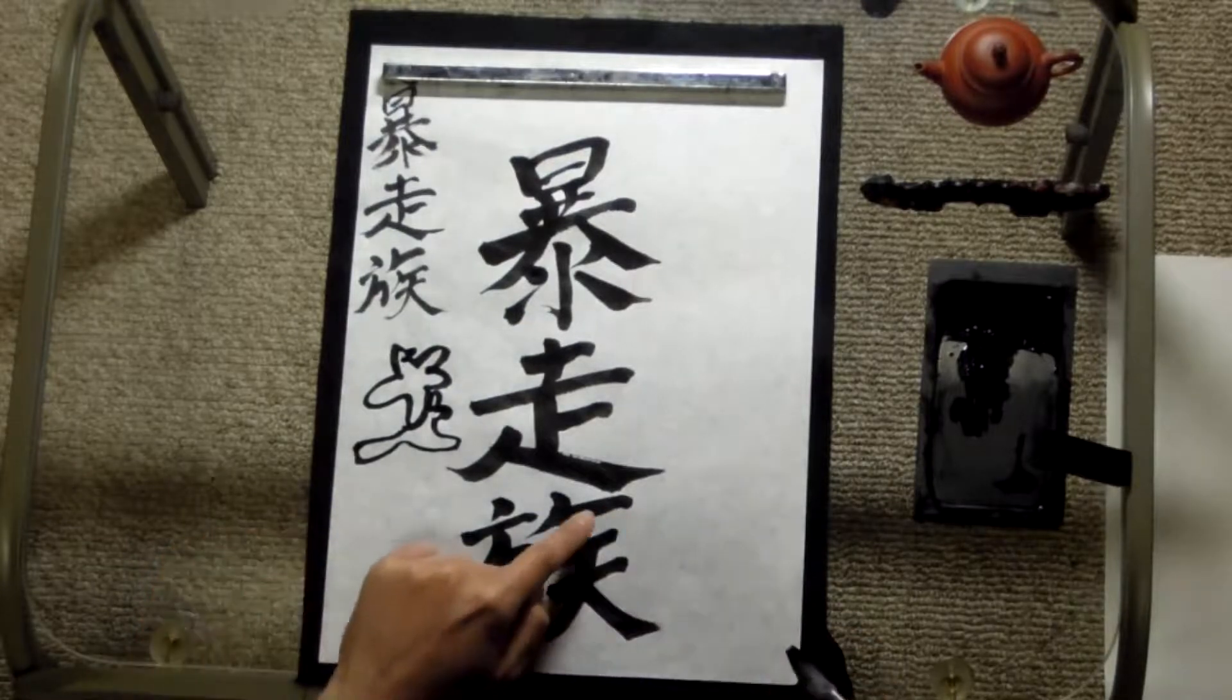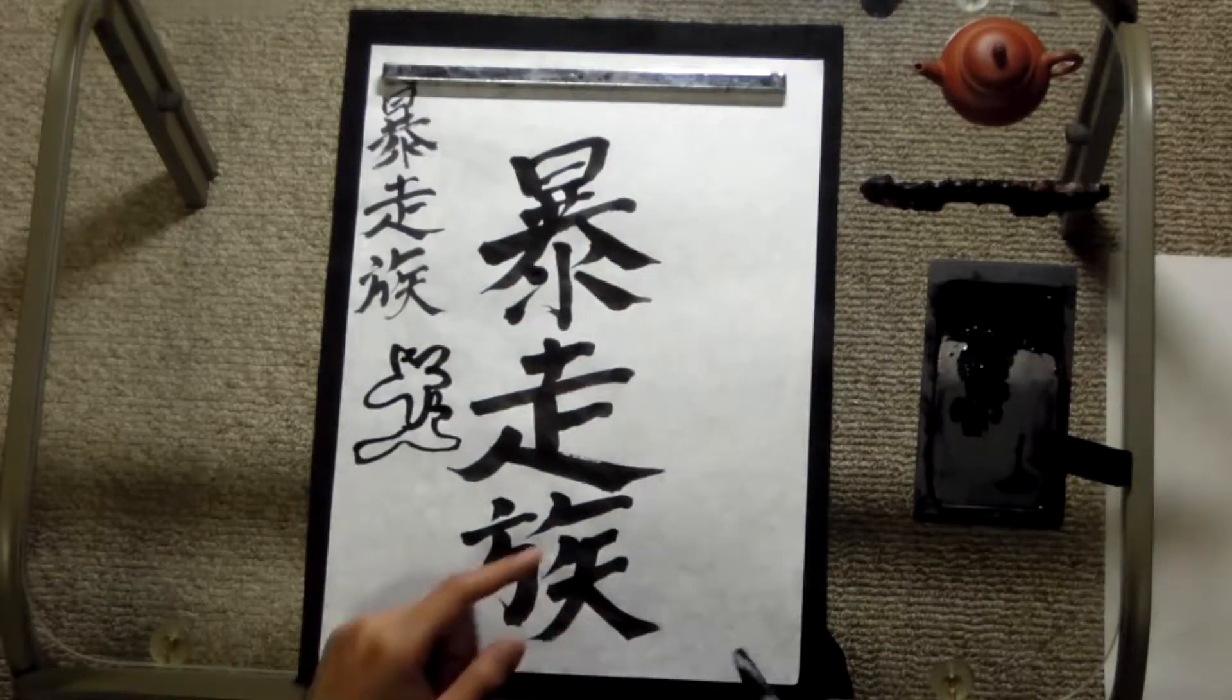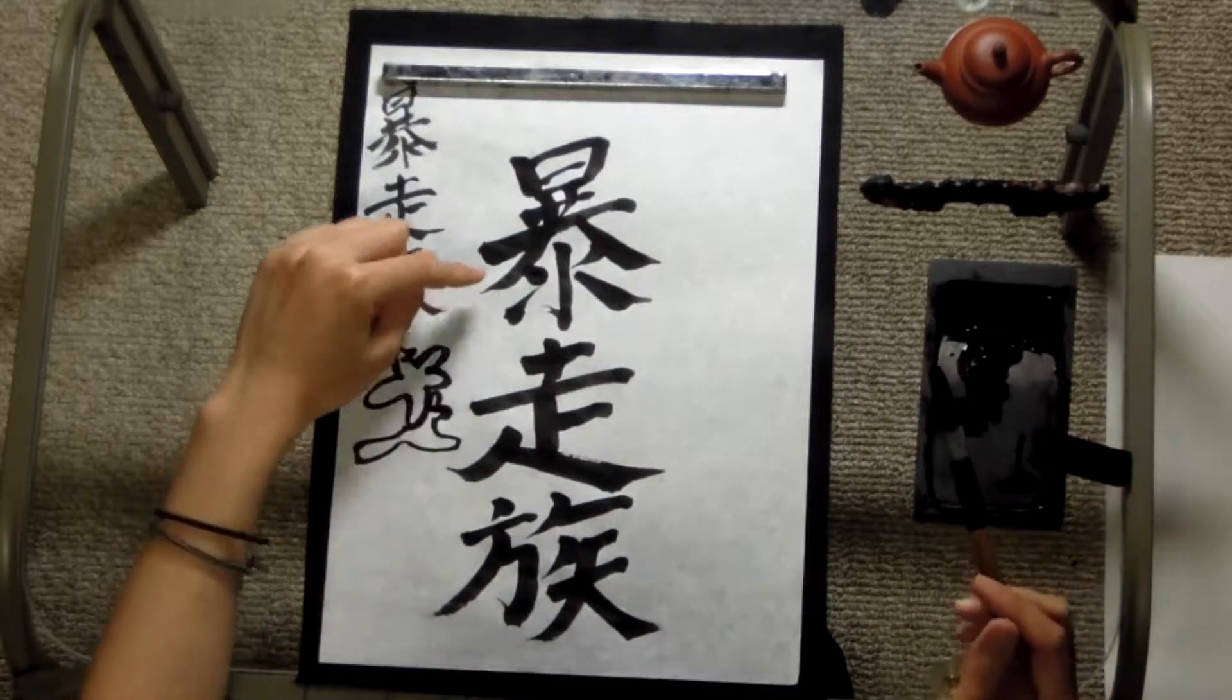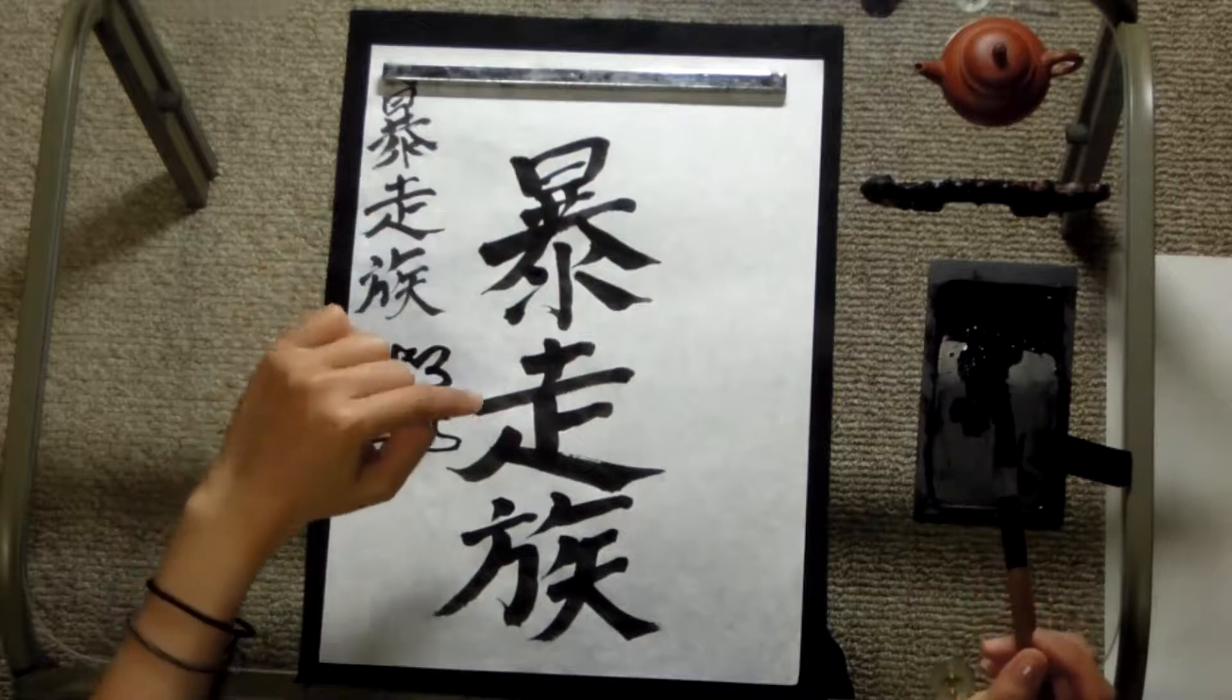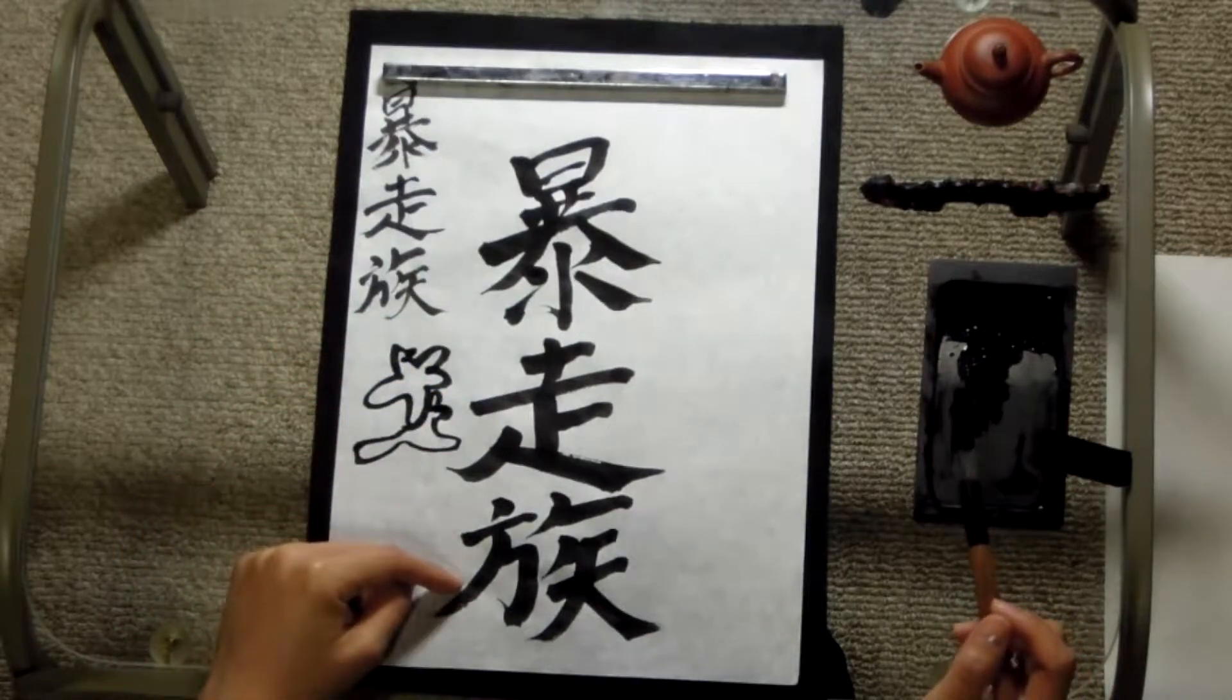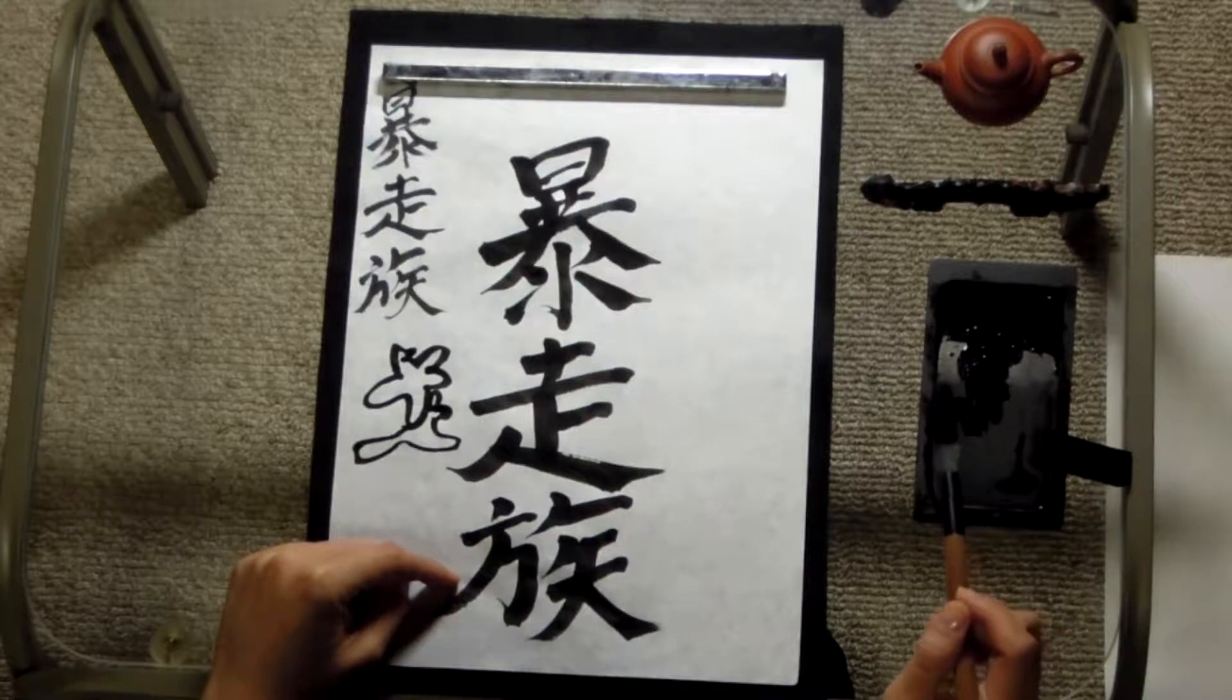This part is aro. Violent, running, people. Bousouzoku.